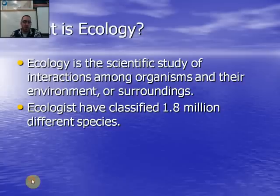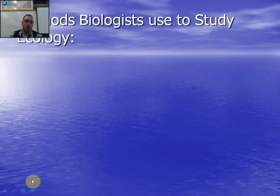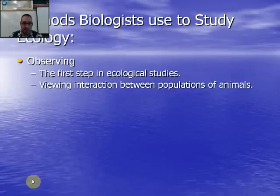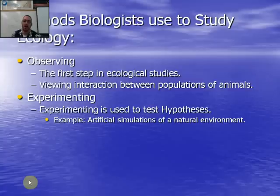There are three methods we use to study ecology. The first is observation — you go out, see things, and start making observations, then pose questions. A lot of times we'll look at behaviors such as mating behaviors and how organisms are interacting within a given environment, trying to make sense of those and develop useful predictions.